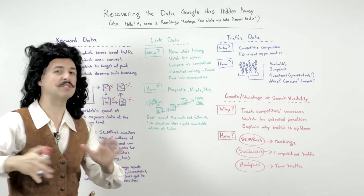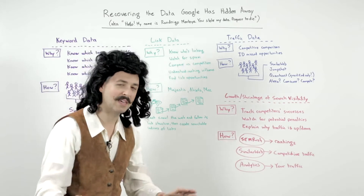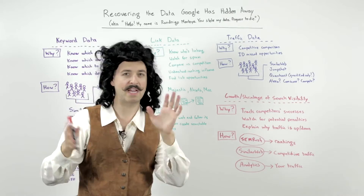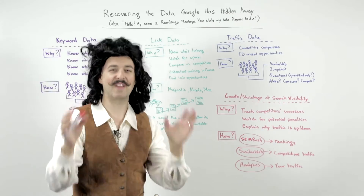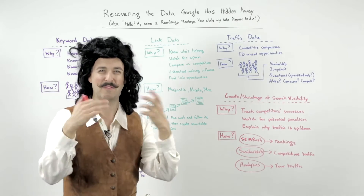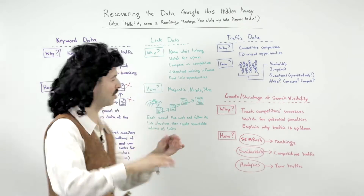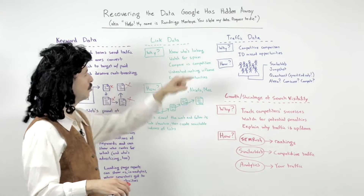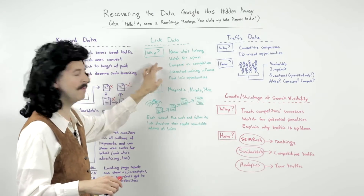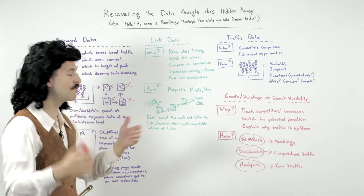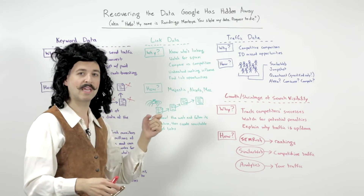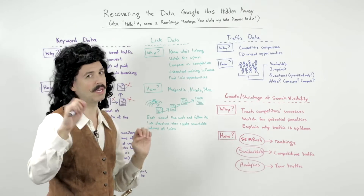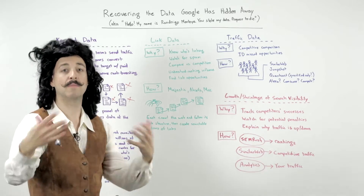Link data. Link data is one of those things that Google took away many, many years ago. They still provide some link data in Webmaster Tools — now called Search Console — but it is not fantastic. It's not comprehensive, it's a little bit of a pain to get through, and it cuts off at certain limits. We want to know who's linking to us and to our competitors, watch for spam, compare our links versus the competition, understand ranking influence from those links, and find new link opportunities — especially true for competitive link analysis.